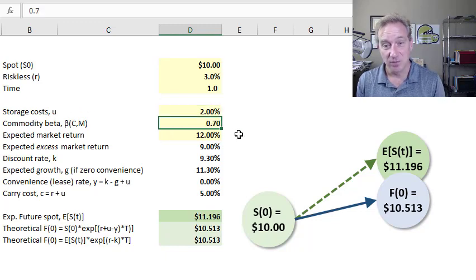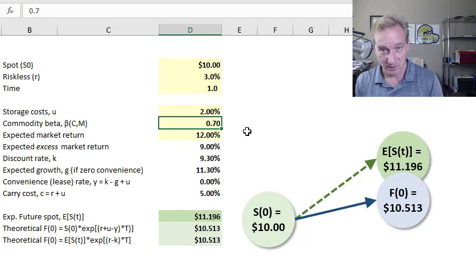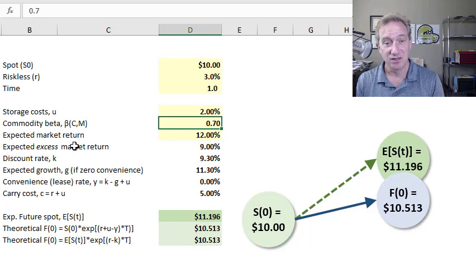Finally, I will assume that this is a high beta commodity, meaning its beta with respect to the single common factor is 0.70, so fairly high beta, and the single common factor is the market's excess return. So this is implicitly a capital asset pricing model-based approach.